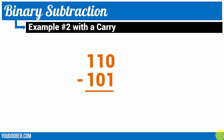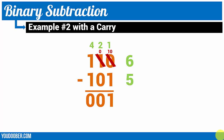Now let's do an example with a carry. So 0 minus 1 — this is the instance where it requires a carry. So we go to the next column, take that 1 and make it a 0, and bring that 1 over to make that 0 a 10. 10 in decimal is 2, so 2 minus 1 would be 1. 0 minus 0 is 0. 1 minus 1 is 0. Let's convert to decimal: 4 plus 2 equals 6, 4 plus 1 equals 5, and 6 minus 5 equals 1.